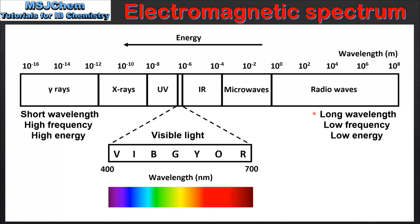In terms of their wavelength, radio waves have the longest wavelength and gamma rays have the shortest wavelength. In terms of frequency, radio waves have a low frequency and gamma rays have a high frequency. And in terms of energy, radio waves are low energy and gamma rays are high energy. So as we go from right to left the wavelength gets shorter and the energy and frequency both increase.